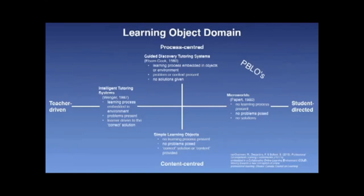Learning objects can be classified on a grid created by the intersection of two constructs or ideas, as shown in the graphic on this slide. One of these constructs concerns the control of the learning enterprise — that is, whether things are under the teacher's control or under the student's control or somewhere in between. The second is oriented around a process-content dichotomy, that is, whether content or process is central to the learning system. These two constructs form the axes of the grid.